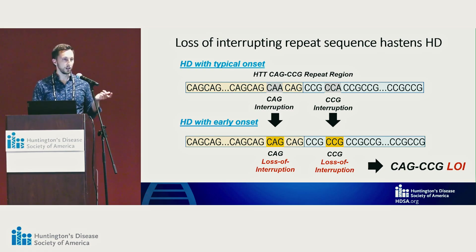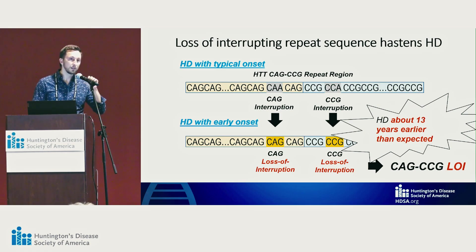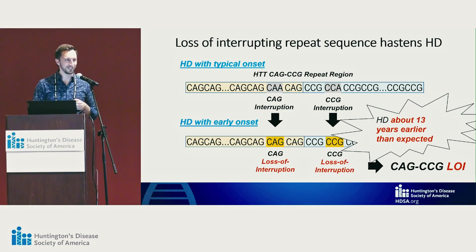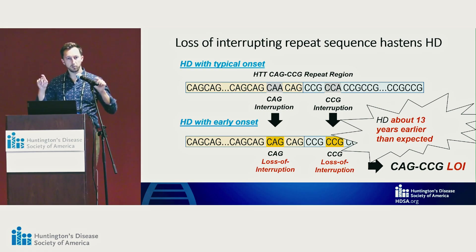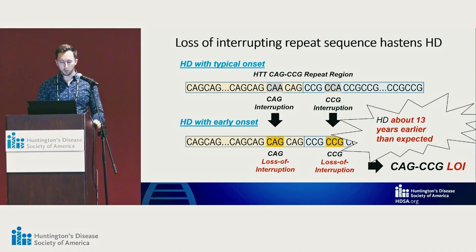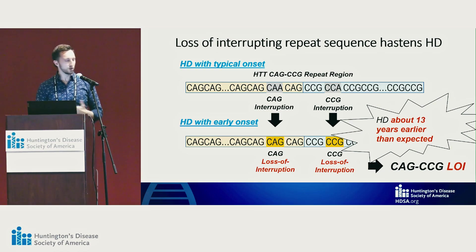People who have this CAG-CCG-LOI change present on average about 13 years earlier than expected — which is huge. The modifiers elsewhere in the genome each individually have an effect of about a year or half a year. Whereas this change seems to have a really profound effect. We're doing a lot of work in Vancouver, and other groups around the world are also working on what this change does — why would people with this one genetic change next to the CAG repeat present so much earlier? We really don't know yet, but there are a few interesting clues.